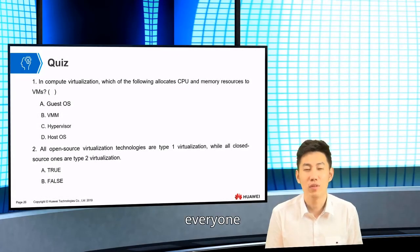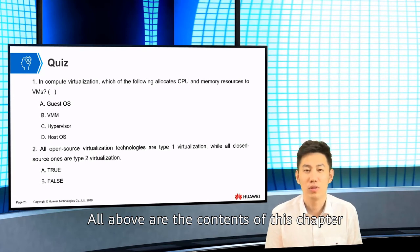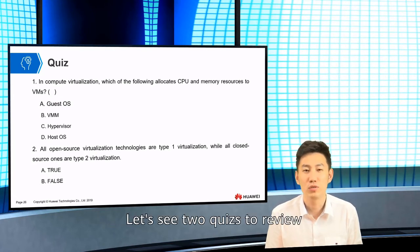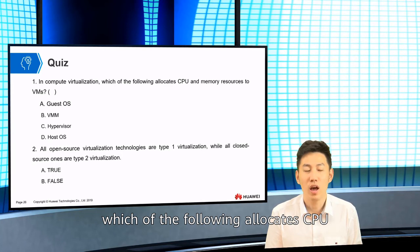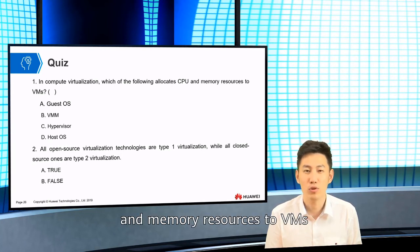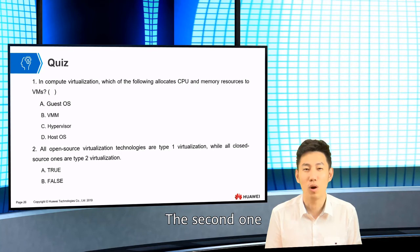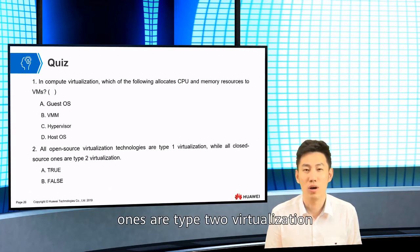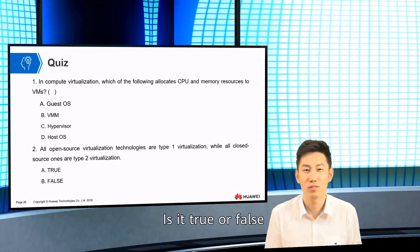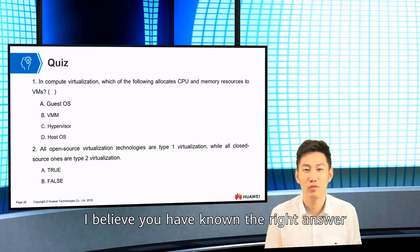Okay everyone, all of the above are the contents of this chapter. Now let's look at two quiz questions for review. The first quiz is: in compute virtualization, which of the following allocates adequate CPU and memory resources to a VM? The second one: all open source virtualization technologies are type 1 virtualization, and all closed source ones are type 2 virtualization — is that true or false? I believe you have known the right answer.